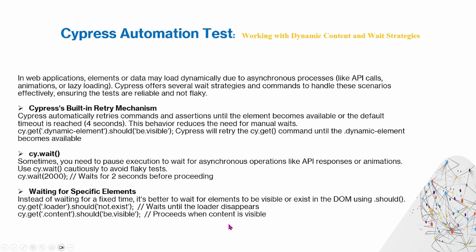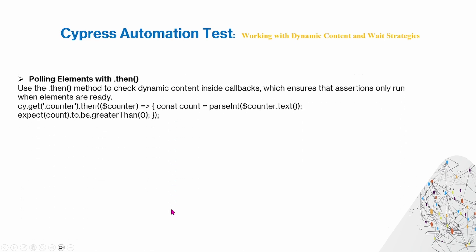You can also wait for specific elements. Instead of waiting for a fixed time, it's better to wait for elements to be visible or exist in the DOM using .should. For example, using cy.get on a loader element and then using .should to check whether it does not exist or does exist, or similarly to check if it's visible.